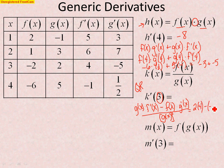f of 3 is negative 2, and then g prime of 3 is negative 5, all over g of 3, which is 2, but you have to square that, so you get 4.